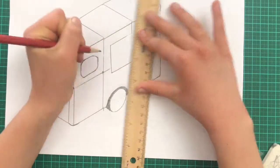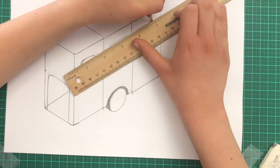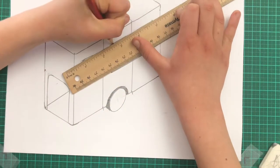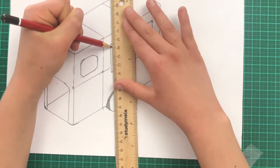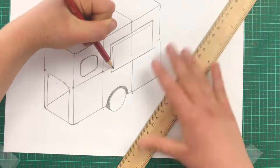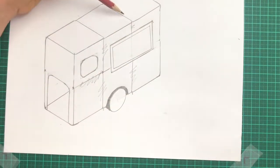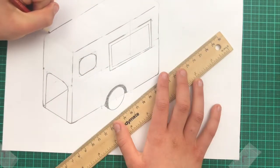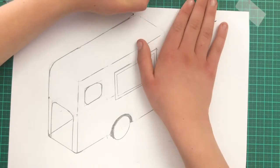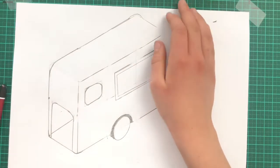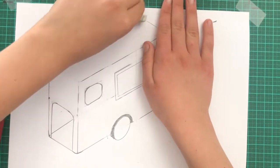I'm just erasing some of the lines that we don't really need, and darkening the lines that we do need. These squiggly lines are the ones that we're going to erase. Now that we've erased them, we can curve the corners. Whoops! That one's a bit bumpy. Let's draw it again.